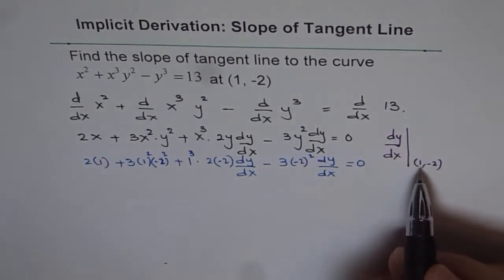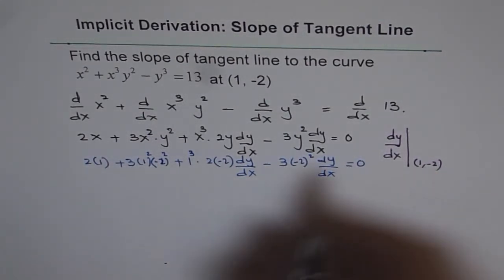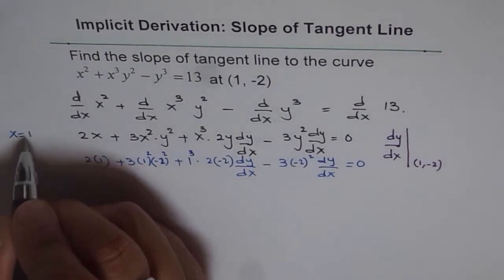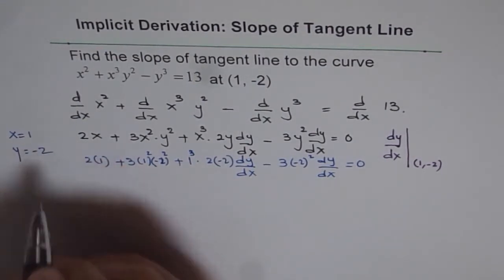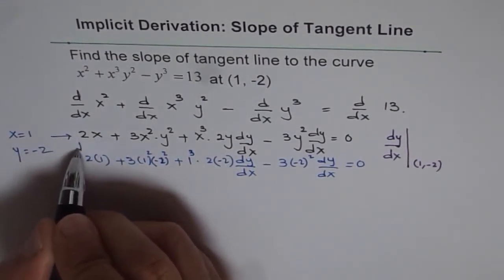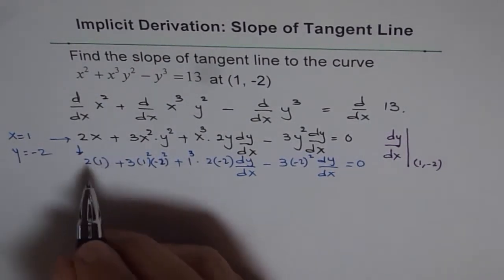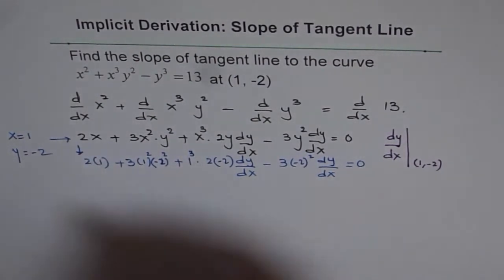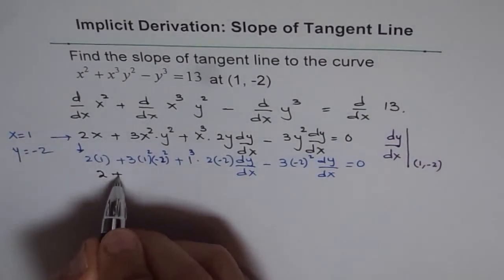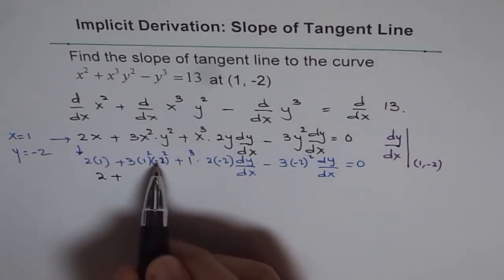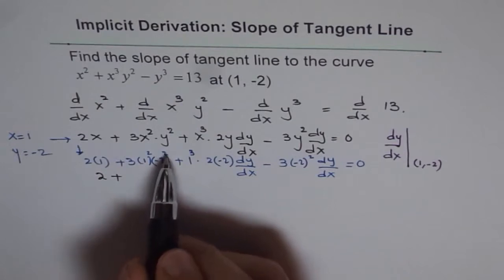So what I did here, I substituted x = 1 and y = -2 in this equation to get this. That is what I did. So when I have x as 1, I get the answer here is 2.